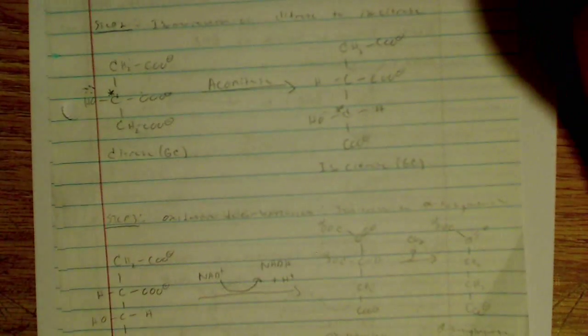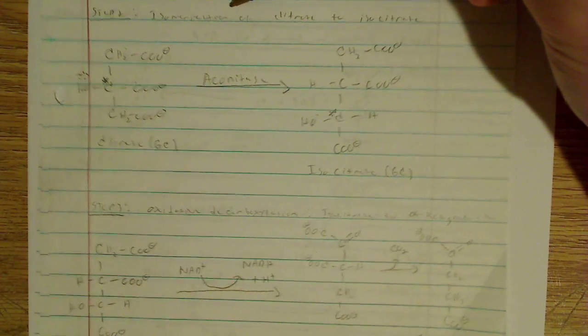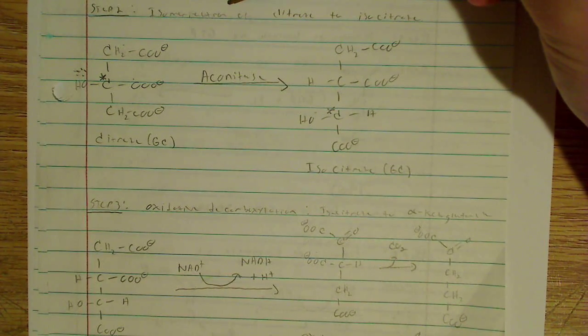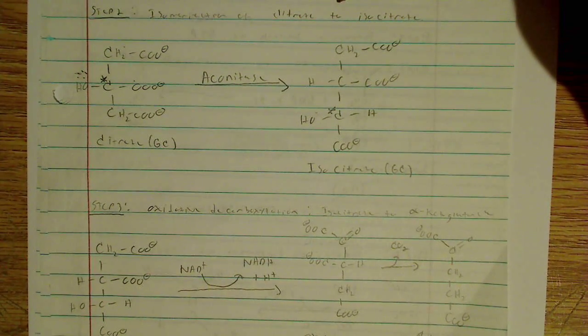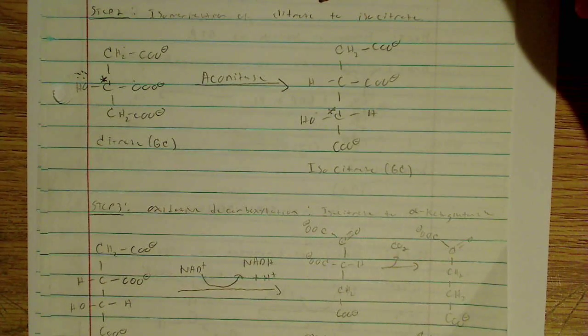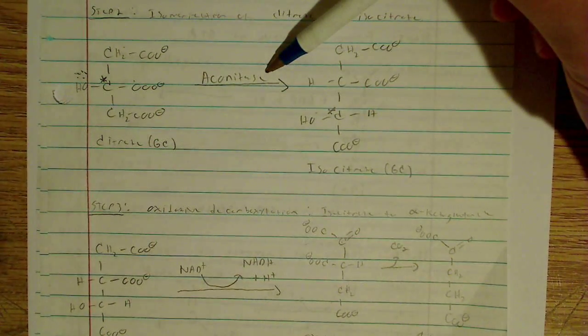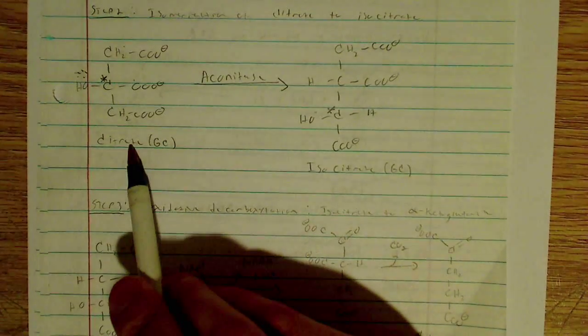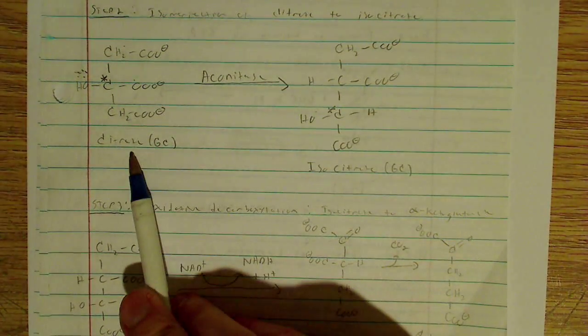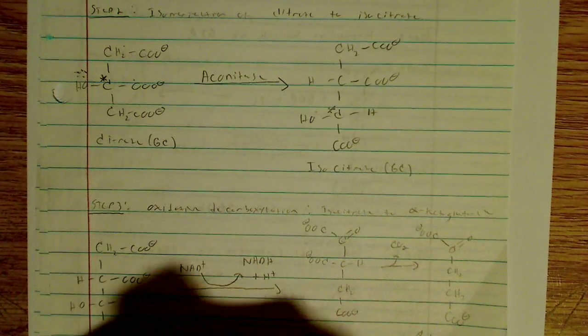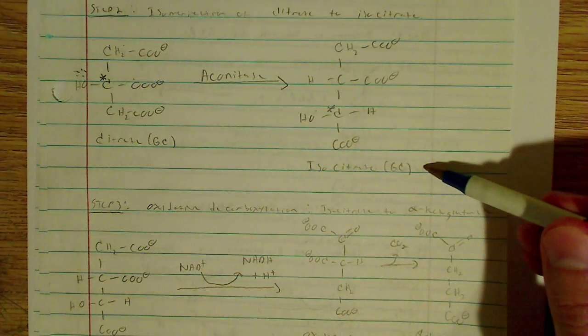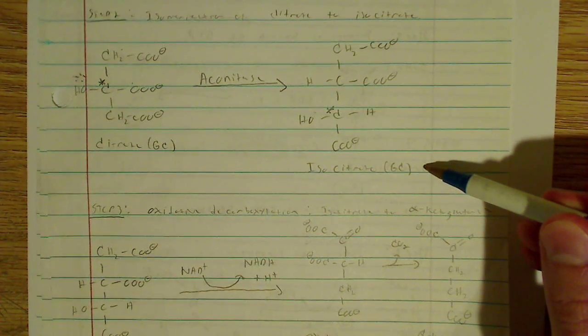And the same thing for step two, I have the isomerization. So it says it's an isomerization here of citrate to isocitrate. So exactly what this reaction is accomplishing, the enzyme once again, how many carbons, what the name of the molecule is, it's citrate, and of course the drawing specifying what it looks like to isocitrate, which is still a six-carbon molecule.